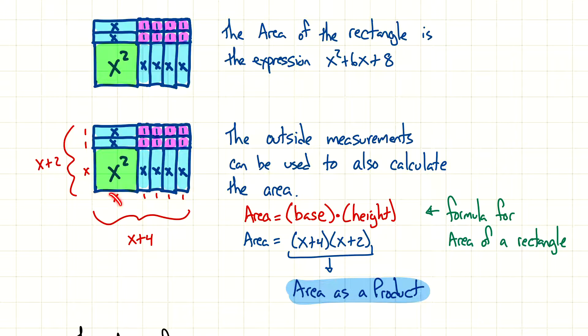So that means we know the dimensions. So, at the bottom, the base, I have x and I have 1, 2, 3, 4. So, that's going to be x plus 4. So the base is x plus 4. And then the height, we have x and we have 2. So, we have x plus 2. It's not going to be 2x, because we're not multiplying these numbers. We're just adding them together.